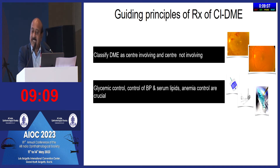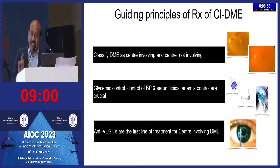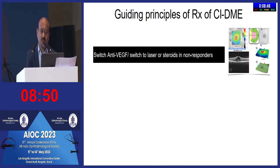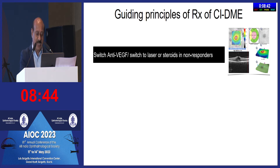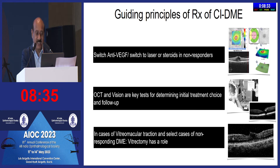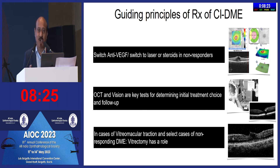The systemic parameters should always be assessed as a general ophthalmologist or as a retina specialist. Then consider which injectables or laser to give as treatment. Once you decide on anti-VEGF injections, you need to see what type of diabetic macular edema it is, whether there is a good response or not, what vision the patient has, and what the OCT findings show. When there is obvious traction, the answer is vitrectomy — not injections or systemic parameters.